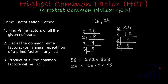The first step — finding prime factors of all the given numbers — is done. I have found prime factors of both 36 and 24 and listed them. Now, in the second step, we list all the common prime factors, or the minimum repetition of a prime factor in any list.